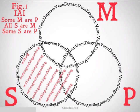What we're going to do is we're going to do the universal first — we're going to shade in that side of S. Then we're going to look at our premise, Some M are P. It's important to note that there are two places our X could go: it could either go in the very center of the diagram, or it could go in the area that's only shared by M and P. Because it could go in either place and we don't have any premises to tell us otherwise, we're going to go ahead and put that X on the line between the two areas.